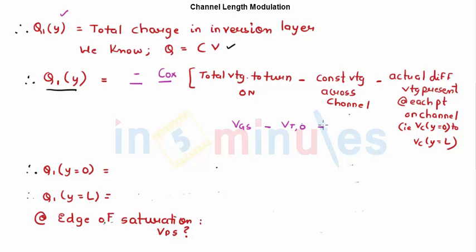Now voltage would be nothing but the total voltage to turn on the transistor, which is nothing but VGS, minus the voltage which is constant across the channel, which we just saw in the previous clip, which is nothing but VT0, minus the voltage which will be actually present at each and every node on the channel, which is nothing but VC(Y).